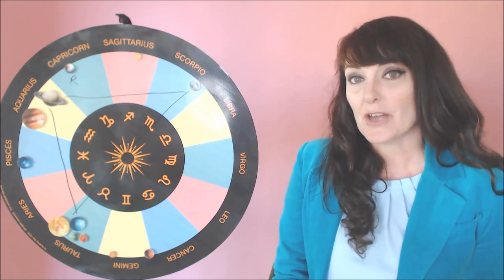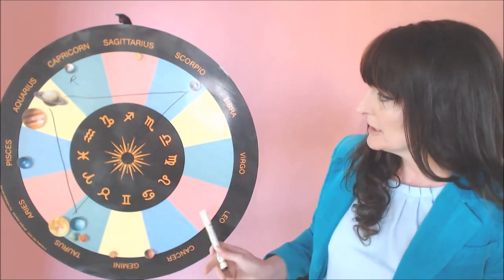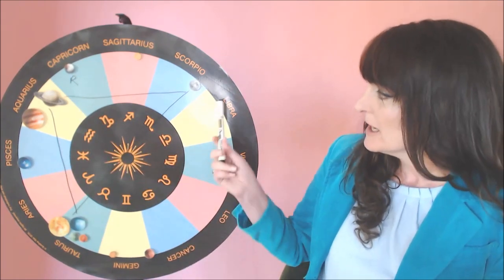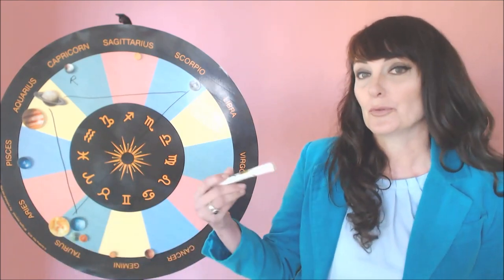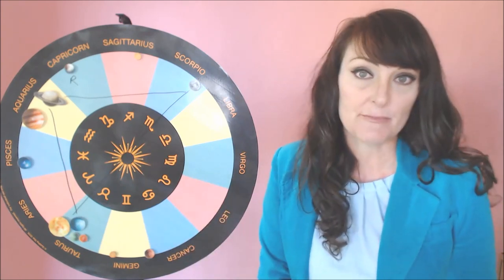We'll talk about Pluto turning retrograde very briefly, because it's not super tied into the aspects to the full moon, but it is a part of what is happening on this day. It'll be most felt, the Pluto retrograde motion will be most felt by cardinal signs. So if you have the sun, the moon, or your rising sign in Capricorn, Cancer, Libra, or Aries, you will feel Pluto's retrograde turn more strongly than other signs may.